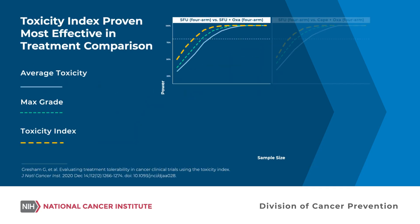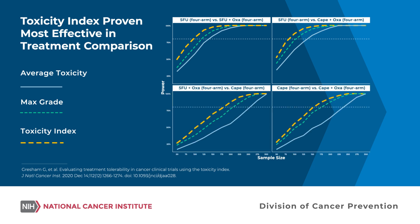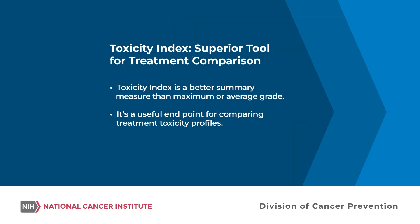Further simulation studies comparing these three methods reinforce that the toxicity index is the most effective summary for distinguishing between treatments based on toxicity. It has more power than both maximum grade and the average grade, with the average grade being least effective. In conclusion, the toxicity index is a superior summary measure for comparing toxicity profiles across different treatment strategies compared to competing summary measures like maximum grade or average grade.